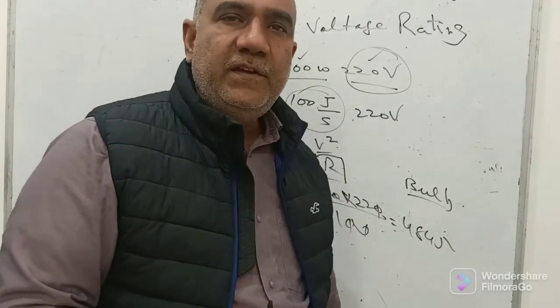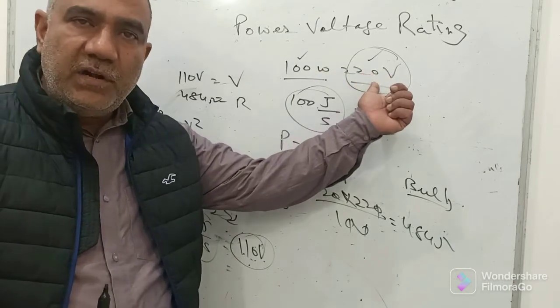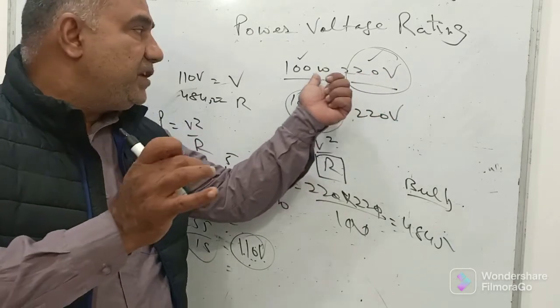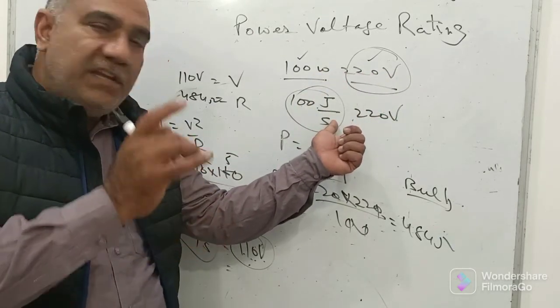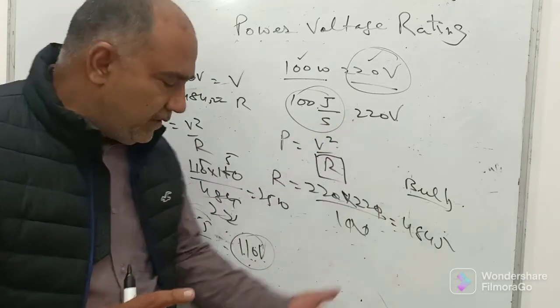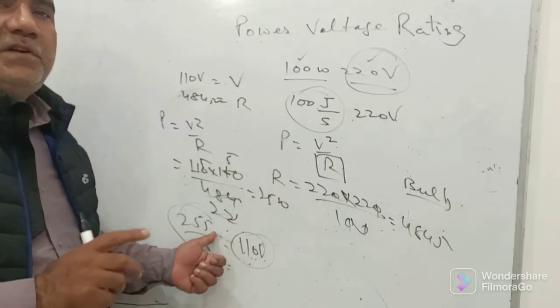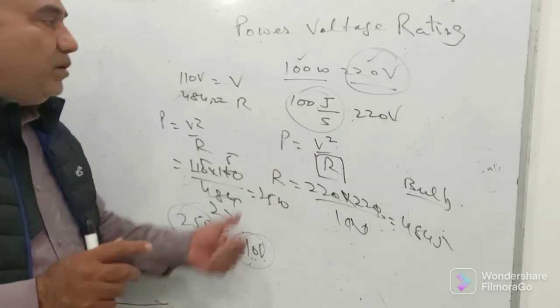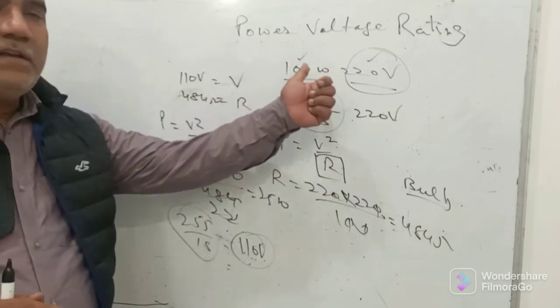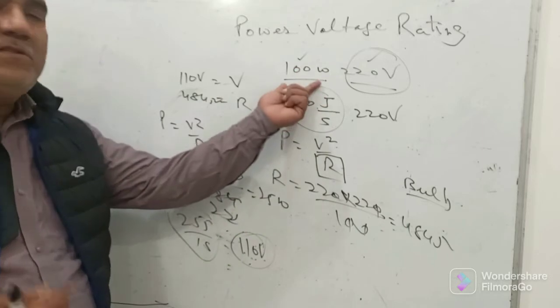So it is mandatory for us to specify both: 100 watt at 220 volt. If you connect the same bulb which was being connected at 220V, when you connect the same bulb across 110 volts, it will be able to consume 25 joules in one second.